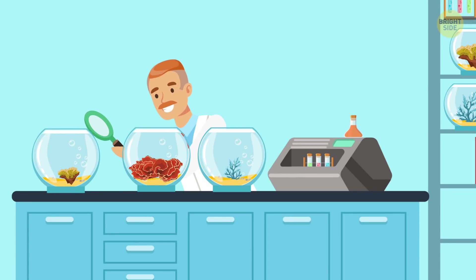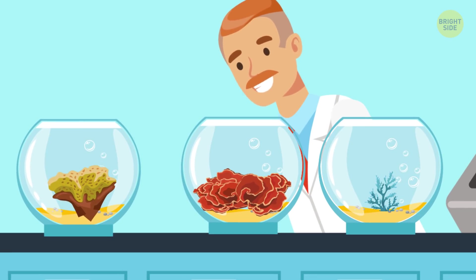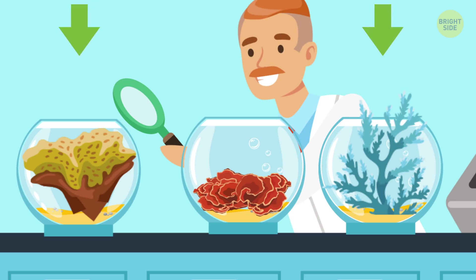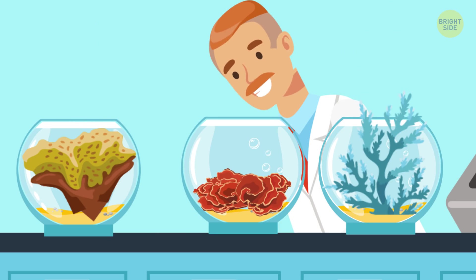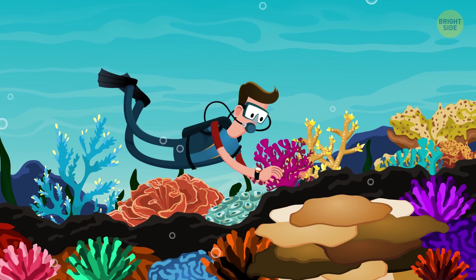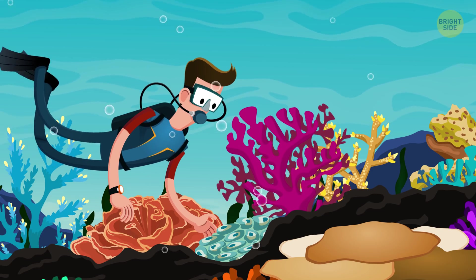Since then, Dr. Vaughn has been experimenting with this microfragmenting technique of coral growth and achieved immense success. In fact, his little patches of coral grow 25 times faster than corals normally do. With this advanced method, it's possible to transplant these corals to their natural relatives and watch those reefs live again.